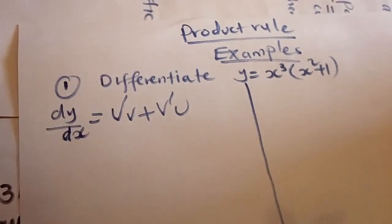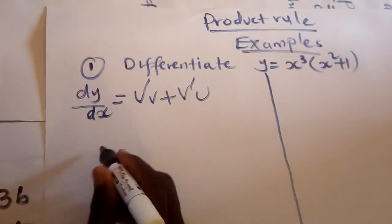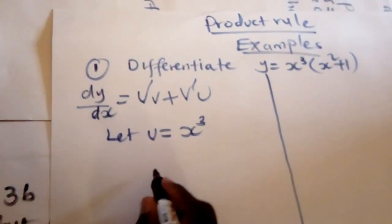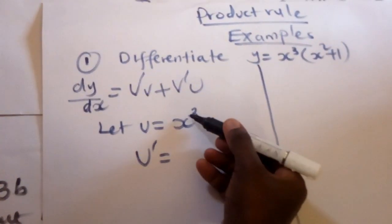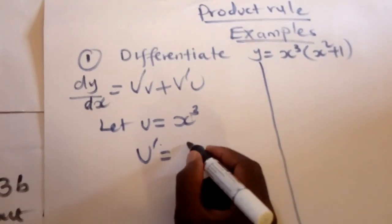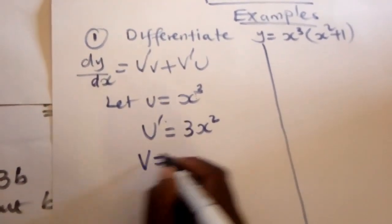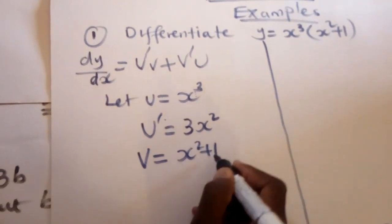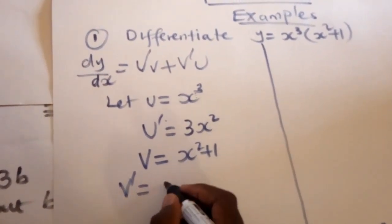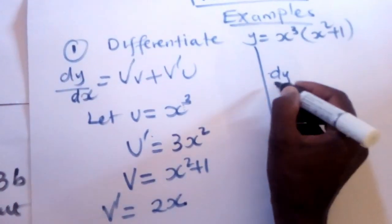We let u be the first function, y = x³, and v be the second function, x² + 1. We find u̅ (the derivative of u): the derivative of x³ is 3x². We also let v = x² + 1, so v̅ (the derivative of v) is 2x.